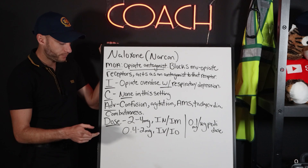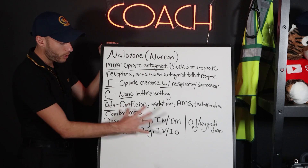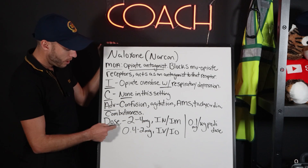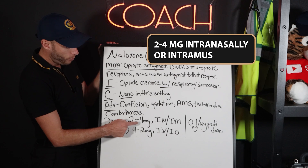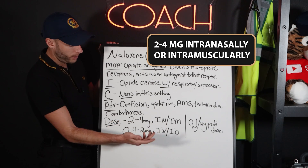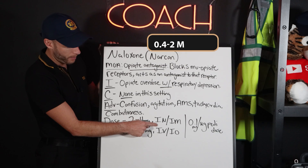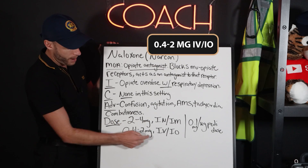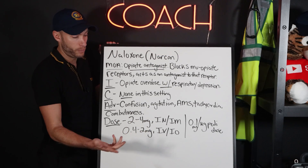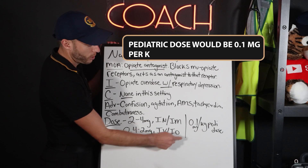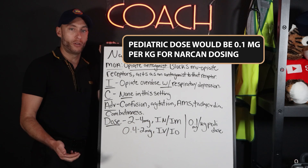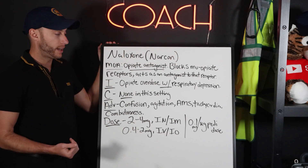The dosing — adult dose, as a national standard, would be two to four milligrams intranasally or intramuscularly. Intranasal is very common. IV or IO would be 0.4 to 2 milligrams, and then the pediatric dose would be 0.1 milligrams per kilogram for Narcan dosing.